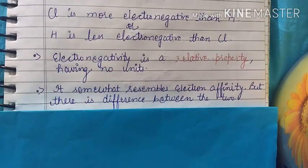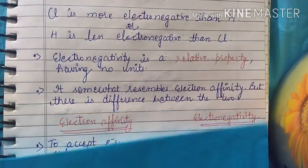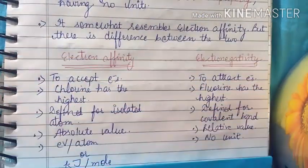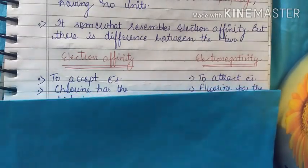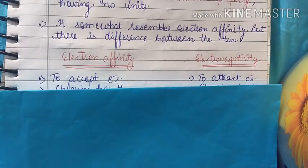It somewhat resembles electron affinity, but there is a lot of difference between the two. Electron affinity is to accept electrons. Electronegativity is to attract electrons.